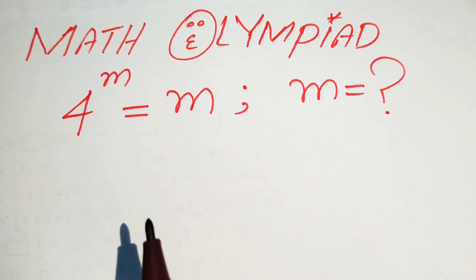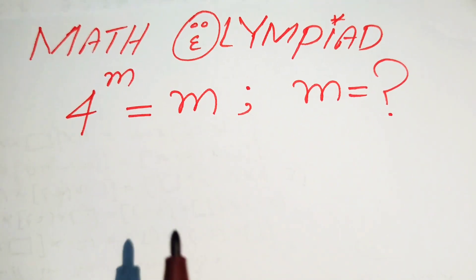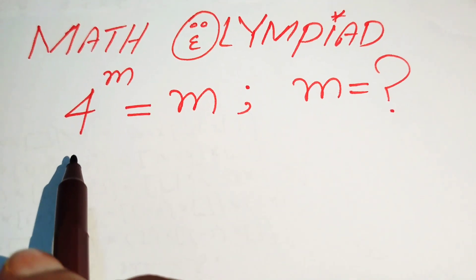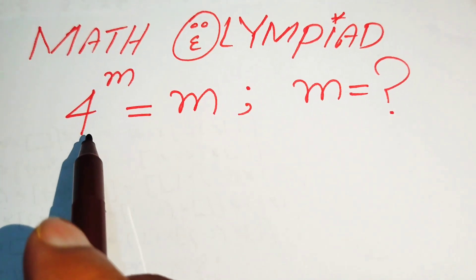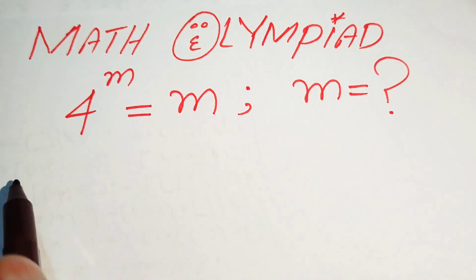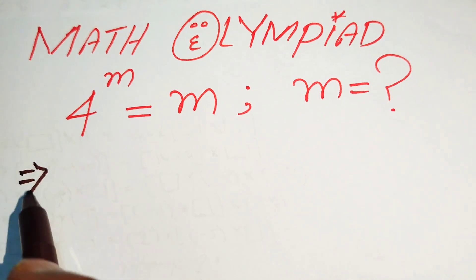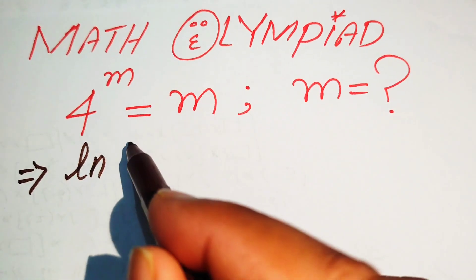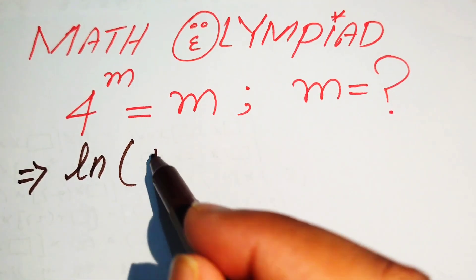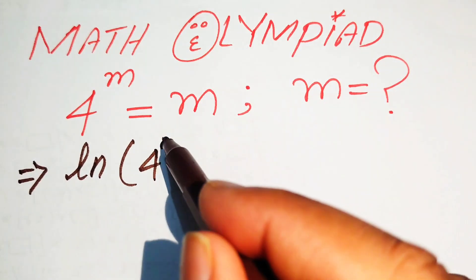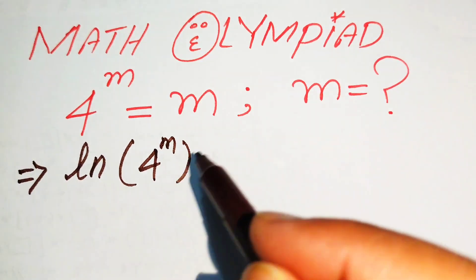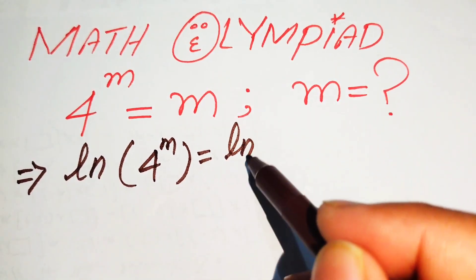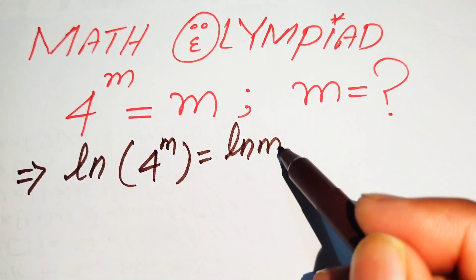The very first step we are going to do is take the log on both sides of this equation, so that when we take log it will be written as log of 4 to the power of m equals log of m.